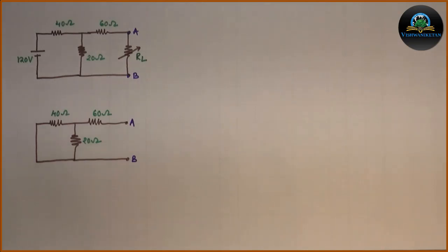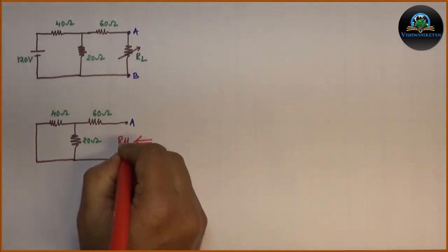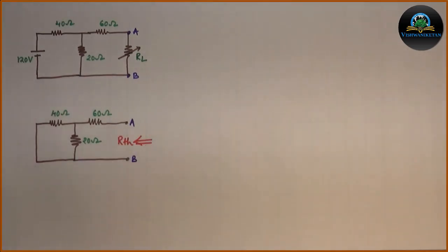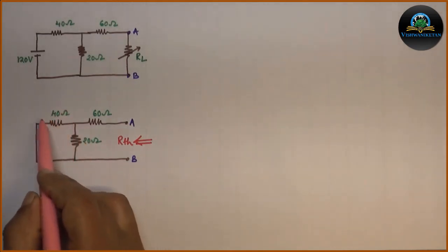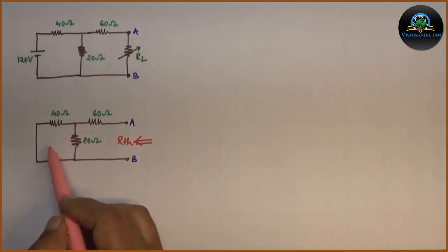From the circuit, the equivalent resistance across AB will be called as RTH. From the circuit we observe that 40 ohm resistor and 20 ohm resistor are connected in parallel as they are connected to same point.